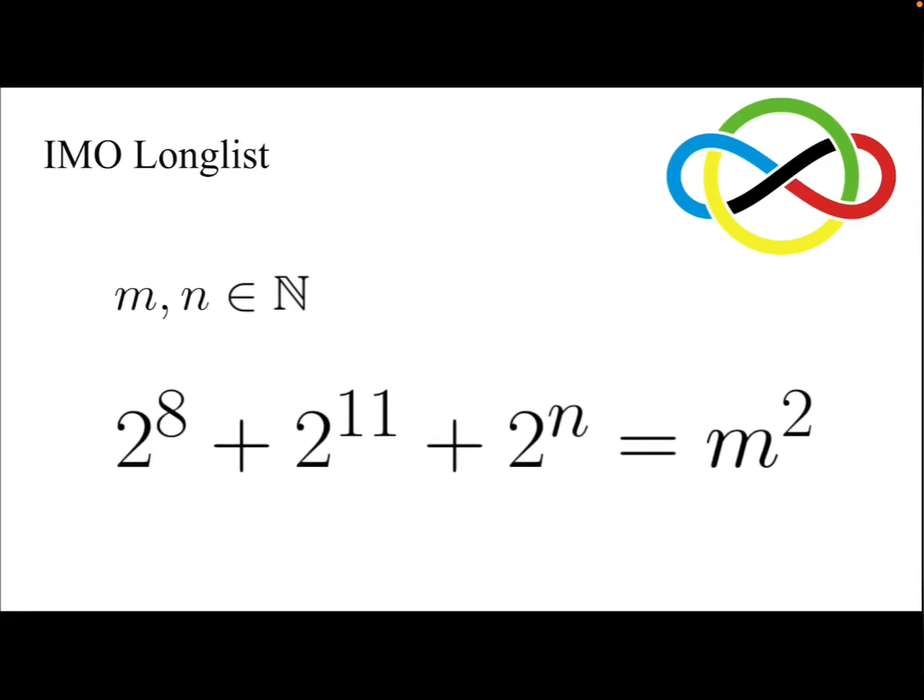Let's take a look at this problem taken from the IMO long list. Find the power of 2 such that when this power is added by 2 to the power of 8 and 2 to the power of 11, the sum is a perfect square.